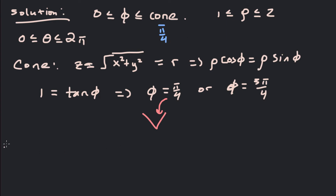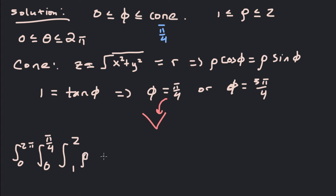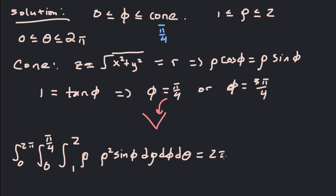Now we've got our bounds, so we can set up the triple integral. The triple integral becomes: theta from 0 to 2 pi, phi from 0 to pi over 4, and rho from 1 to 2. Our integrand is the square root of x squared plus y squared plus z squared, which is just rho. And dV becomes rho squared sine phi, then d rho, d phi, d theta.